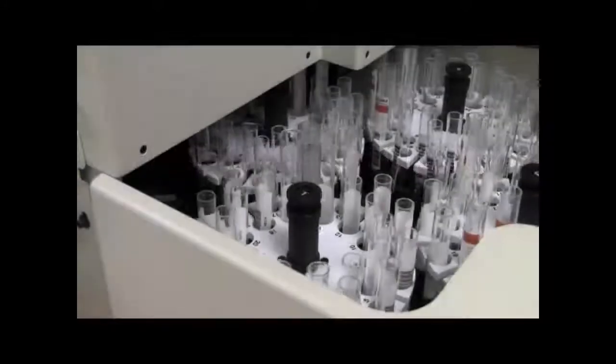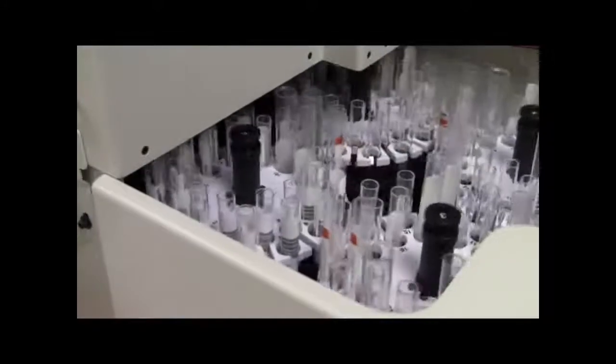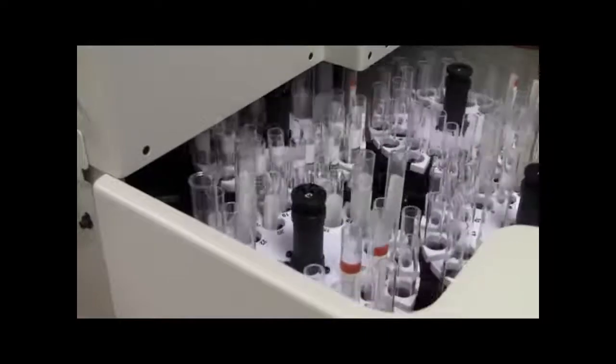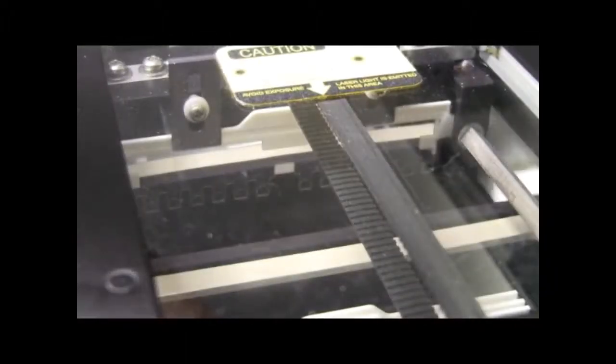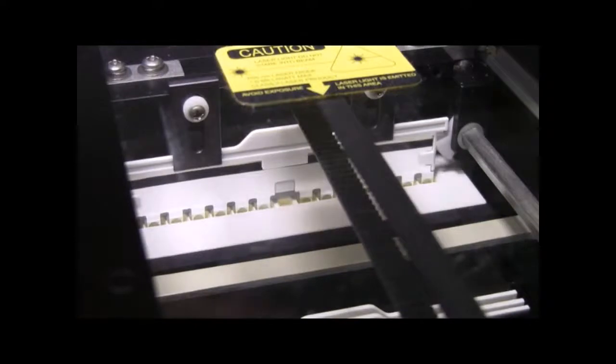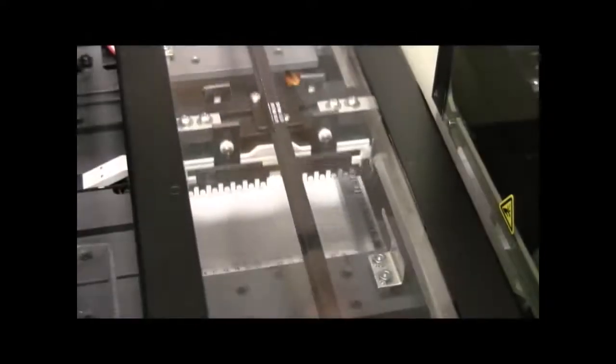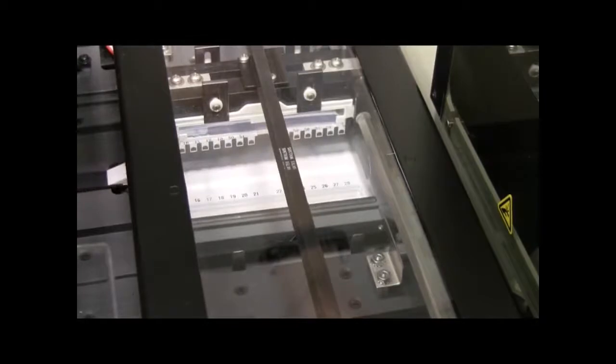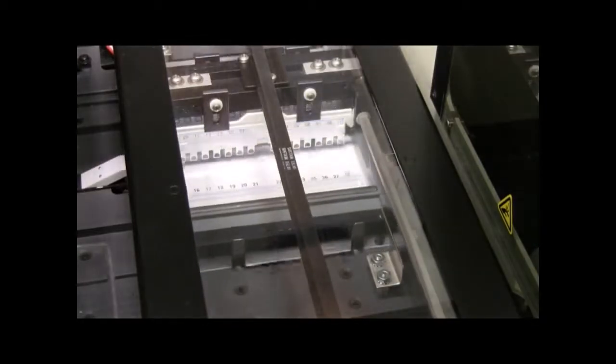This video shows every major step for doing immunofix. The Spiffy 4000 reads patients' barcodes for positive patient identification and then samples the correct sample, making proper dilutions and loading the sample into the sample well tray. Afterwards, the applicators automatically pick the sample up and transfer the sample over to the agarose gel.